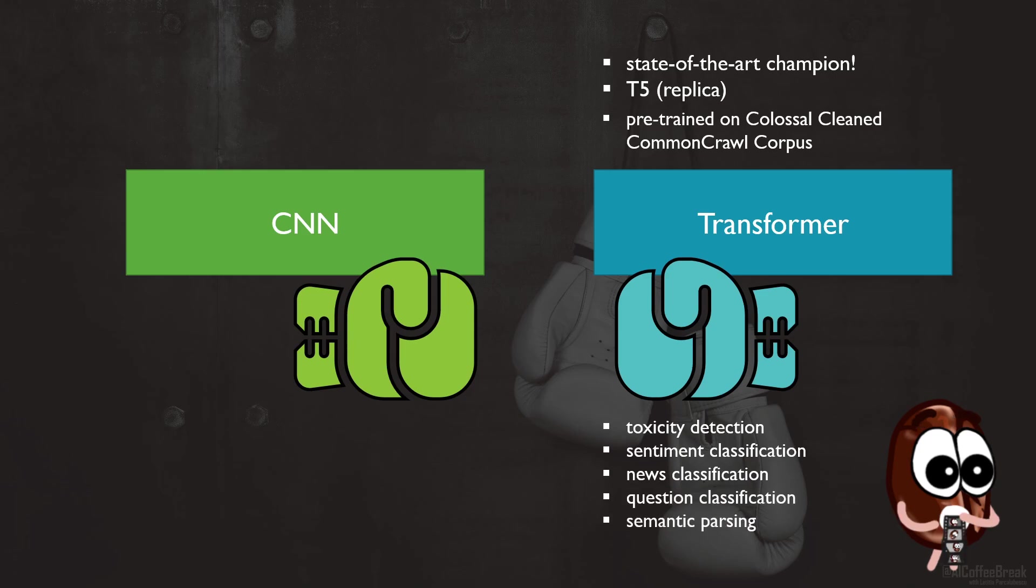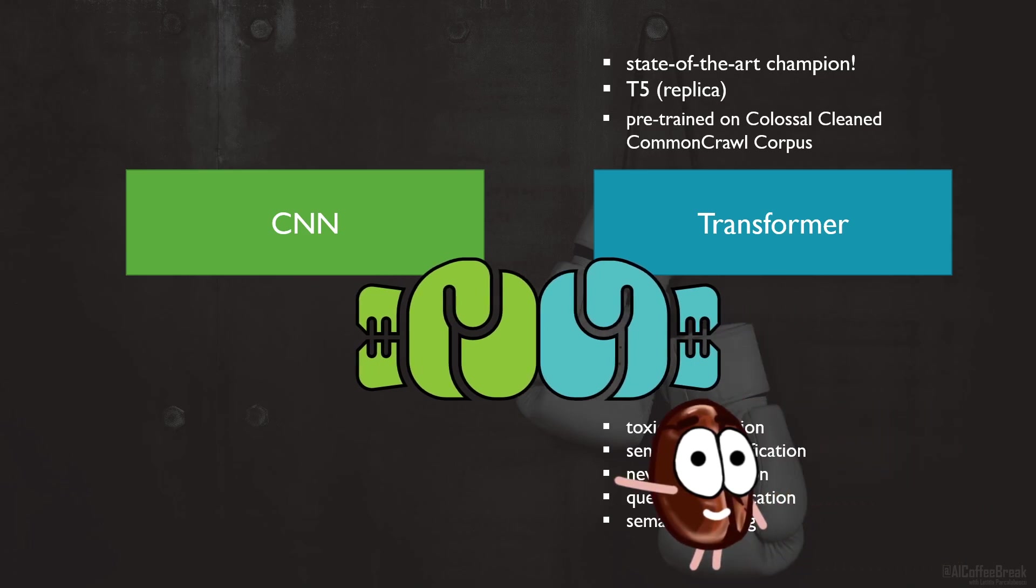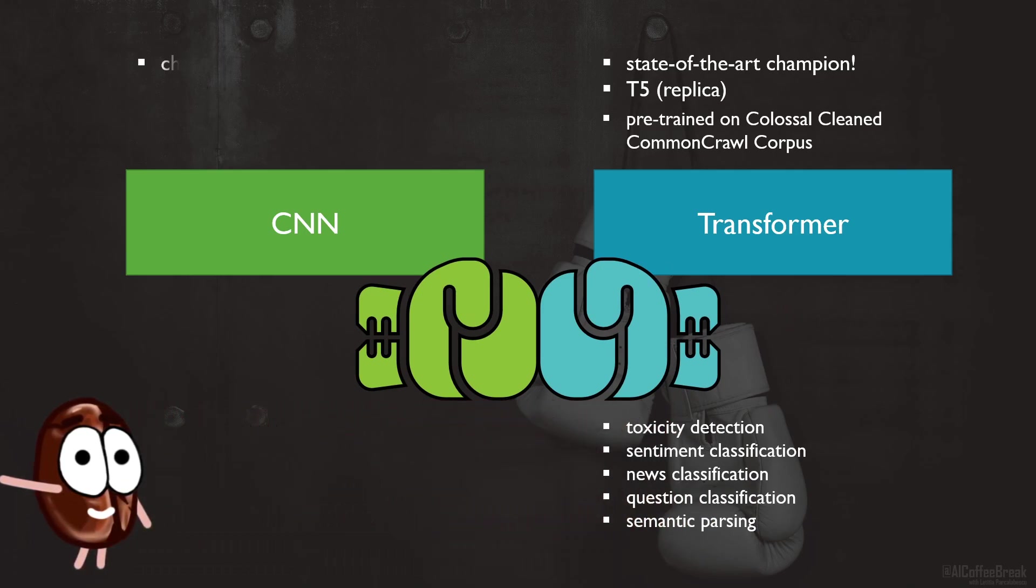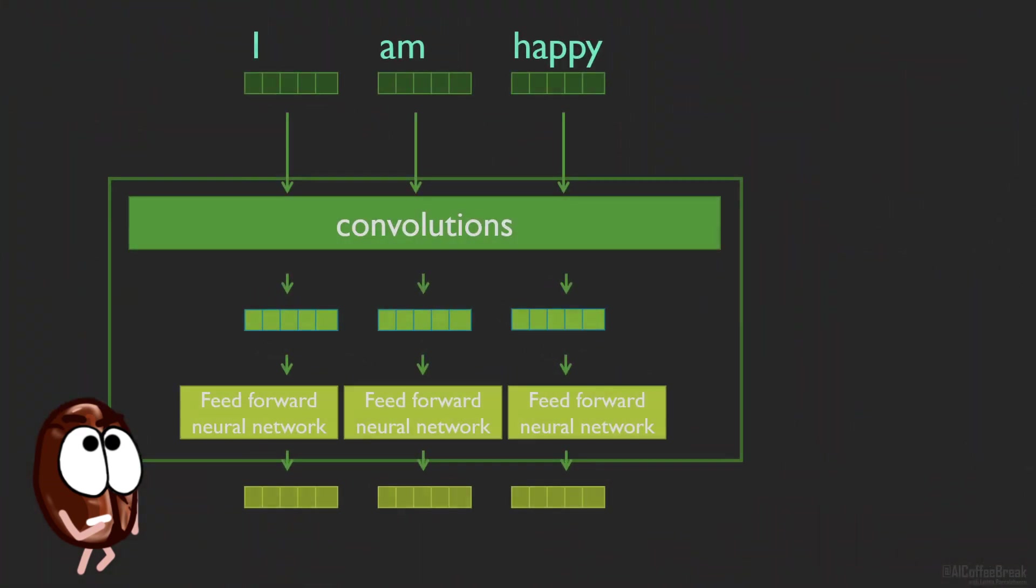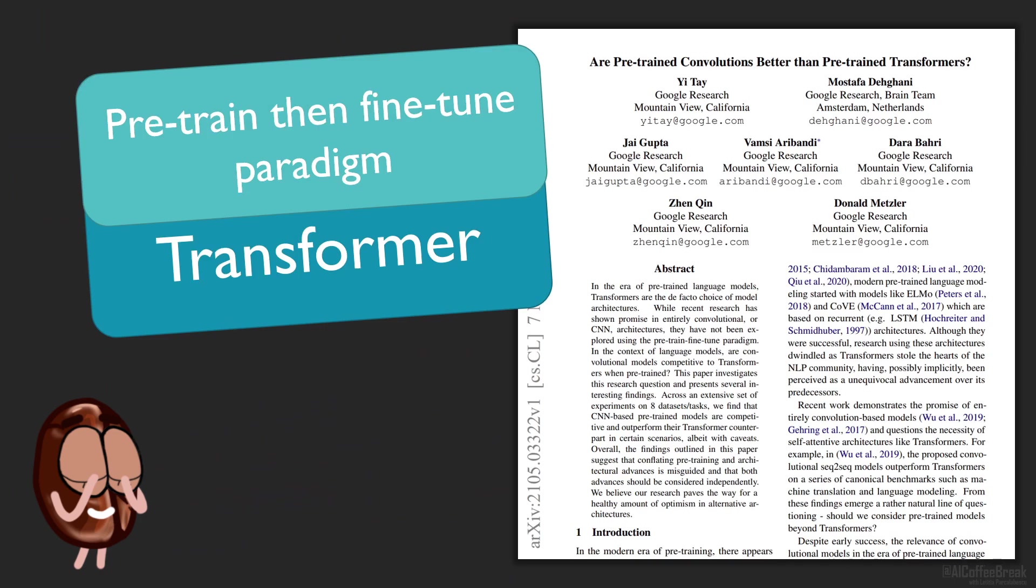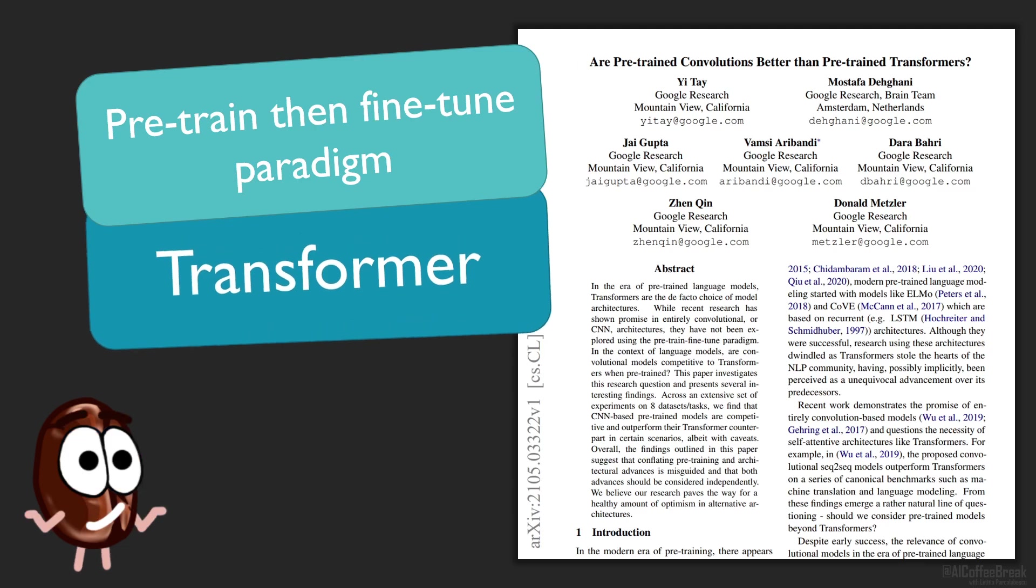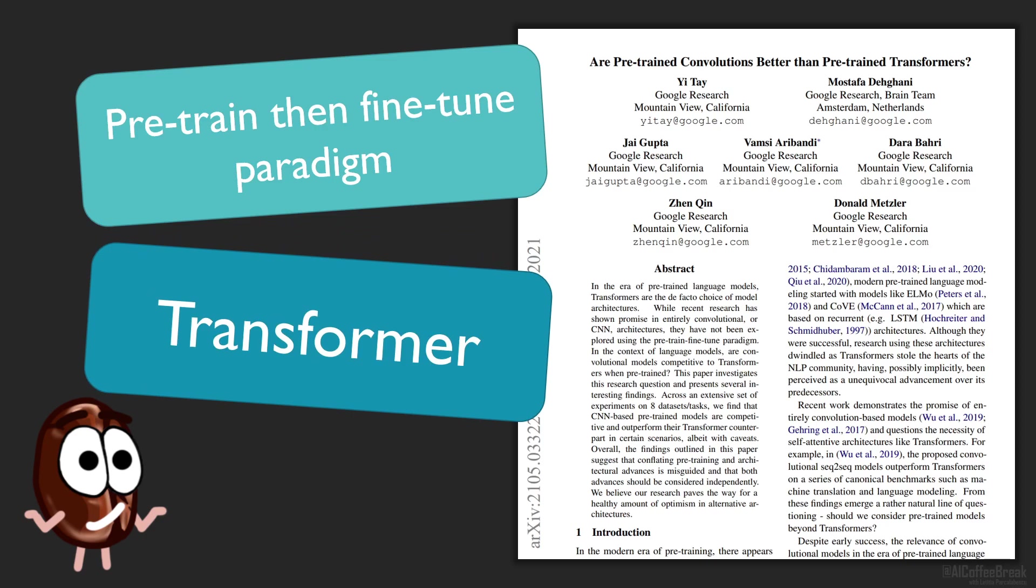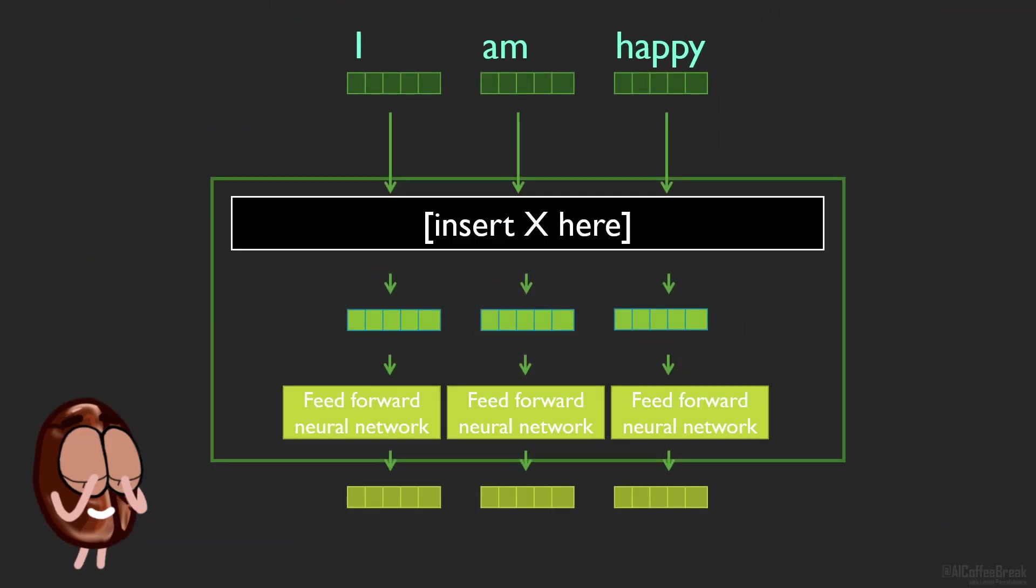This model is further fine-tuned on diverse downstream tasks comprising toxicity detection, sentiment or news or question classification, and semantic parsing. In the left corner, we have the challenger: a sequence-to-sequence CNN model which is basically a transformer architecture but where self-attention is replaced with convolutional blocks.